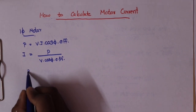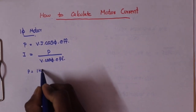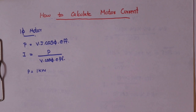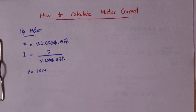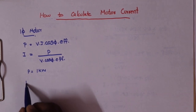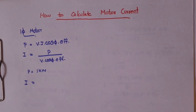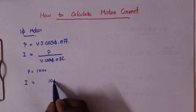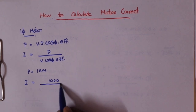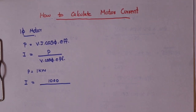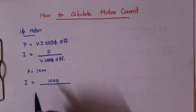Now let's apply the equation. We have a 1kW motor. I is equal to power divided by V. We divide using the same formula.